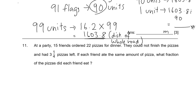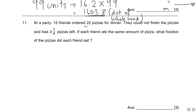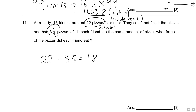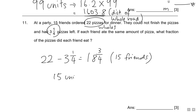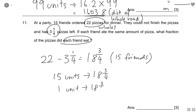Question 11: There's a party with 15 friends who ordered 22 pizzas, but they couldn't finish — 3 and 1/4 pizzas were left. Amount eaten: 22 − 3¼ = 18¾ pizzas. This was eaten by 15 friends, so each friend ate 18¾ ÷ 15 = 1¼ pizzas.